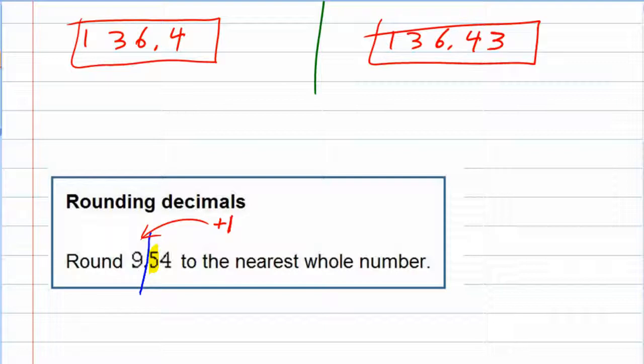This time, adding 1 to the 9 actually gives us 10 because adding 1 plus 9 is 10. So we drop everything behind the decimal because we're rounding only to the whole number.